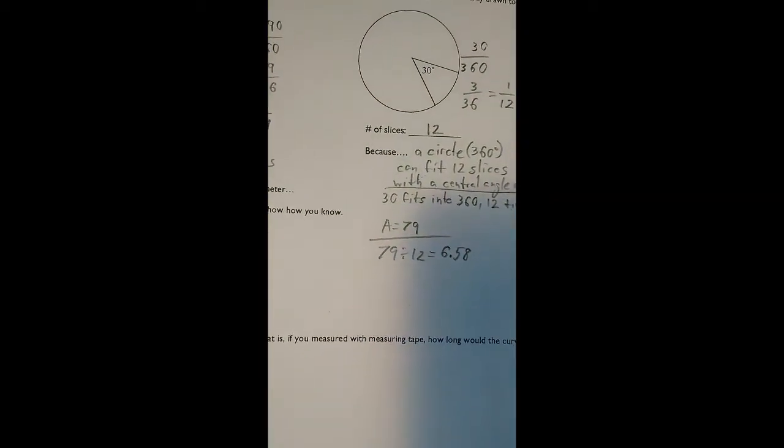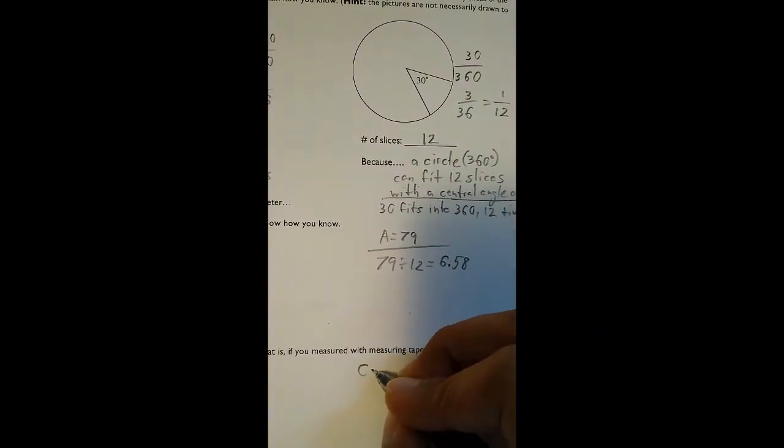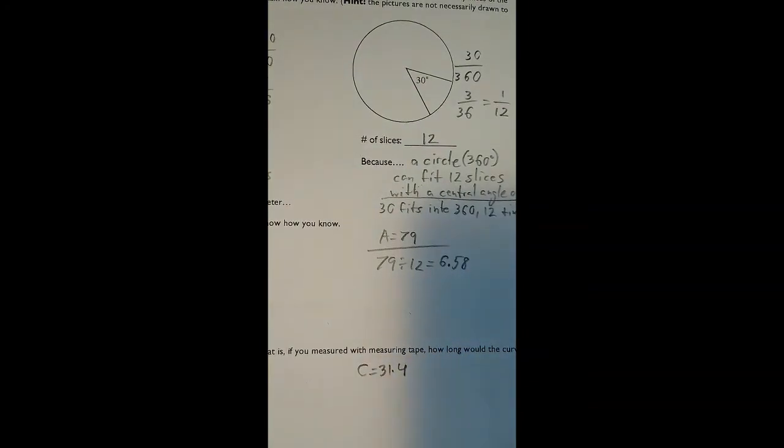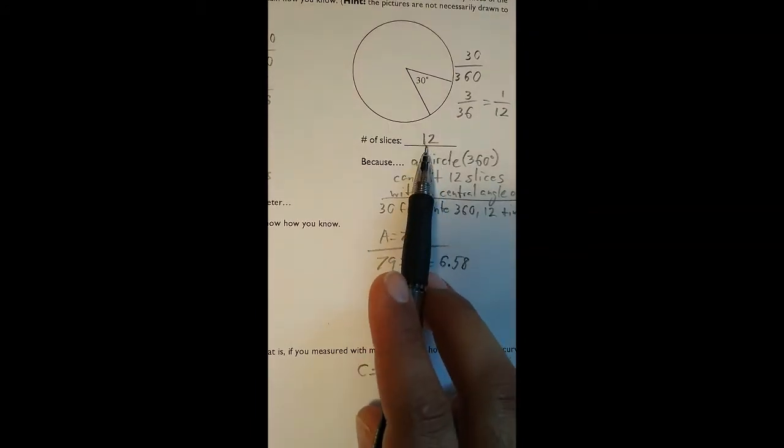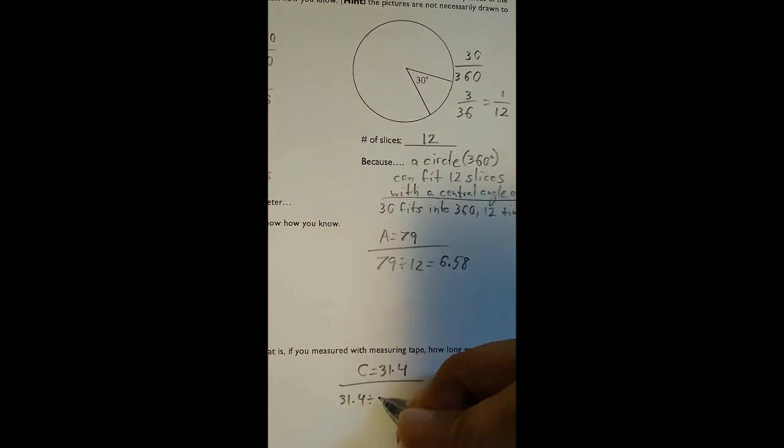Now let's go over to our other pizza. The pizza is the same size, so our circumference is still going to be 31.4. That doesn't change. But now, instead of dividing it by 4, we're going to divide it by 12 because we have 12 slices instead of 4. So what's 31.4 divided by 12?